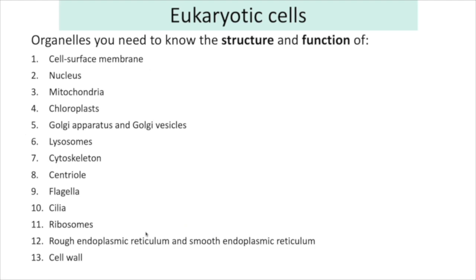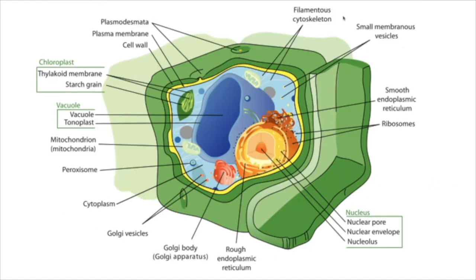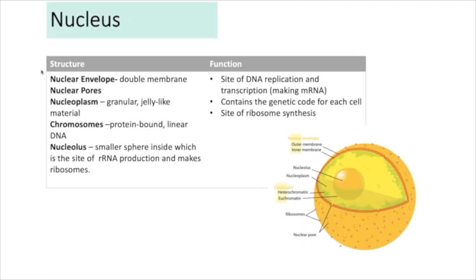The next part of the spec covers the organelles found in eukaryotic and prokaryotic cells — you need to know their structure and function. There are 13 organelles to know for eukaryotic cells, which include animals, plants, and fungi. A cross-section of an animal cell and a plant cell show the location and general shape of these organelles.